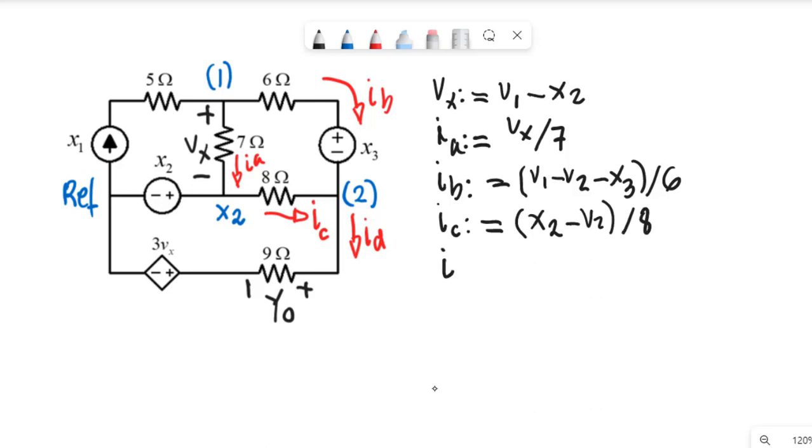Id is V2 minus 3Vx divided by 9. We are ready to write the KCL equations of interest, which are two.